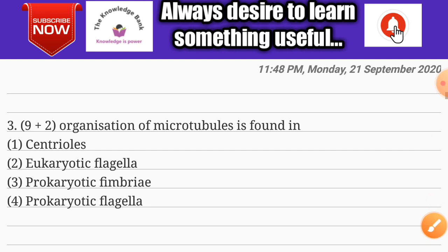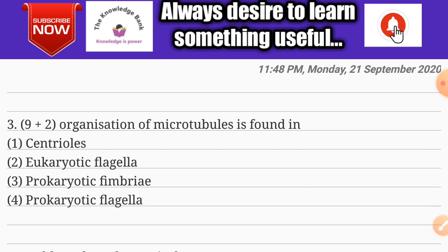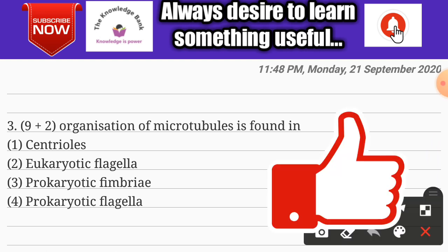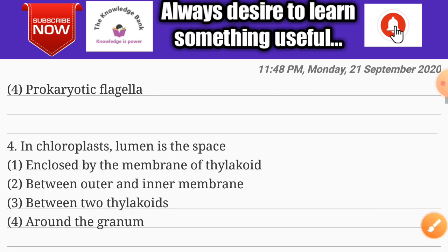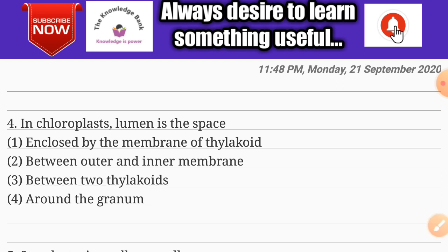Question number three: the (9+2) organization of microtubules is found in — options are centrioles, eukaryotic flagella, prokaryotic fimbria, and prokaryotic flagella. The correct answer is option four: prokaryotic flagella.